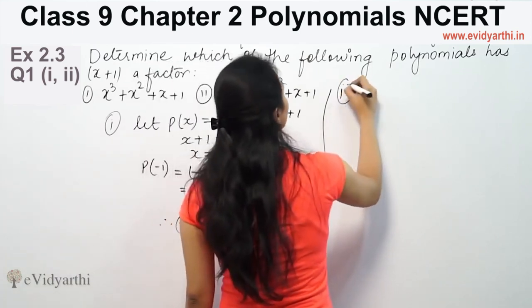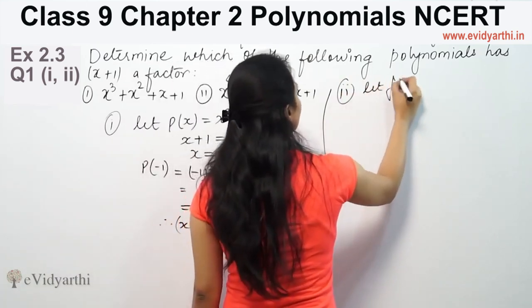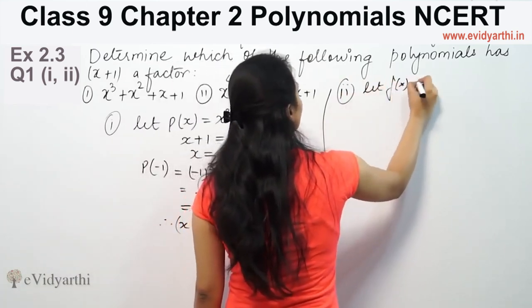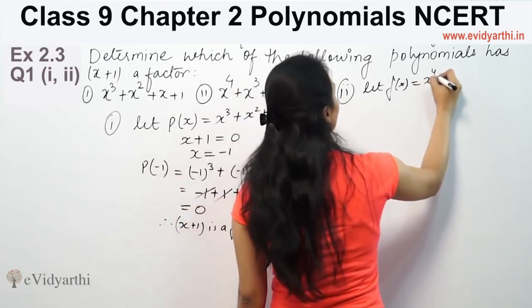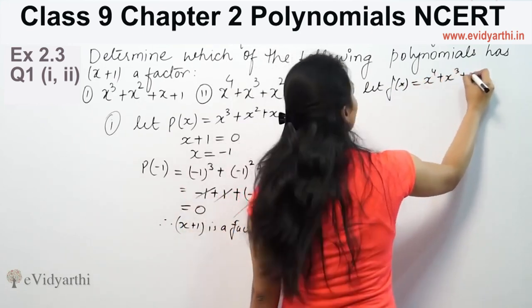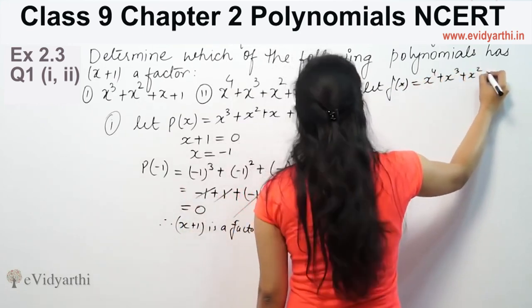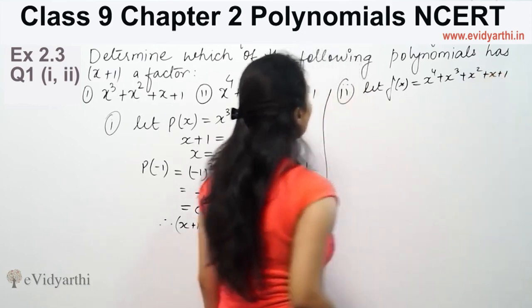Now the second polynomial. We have been given x to the power 4 plus x cubed plus x squared plus x plus 1.